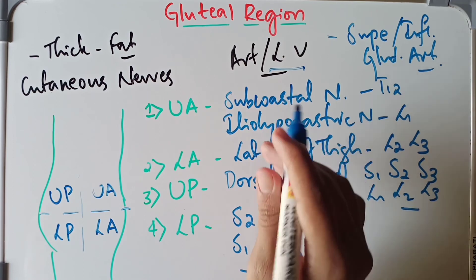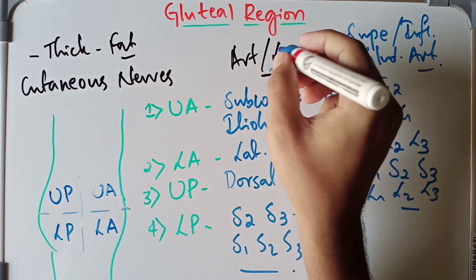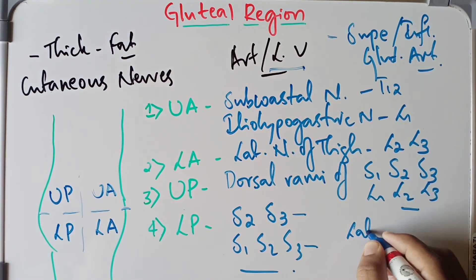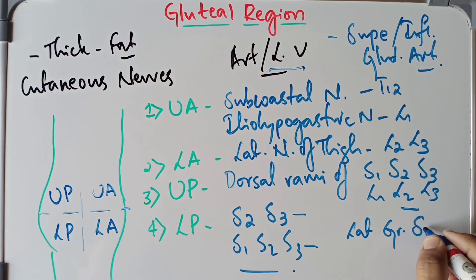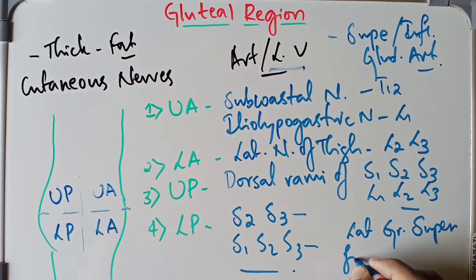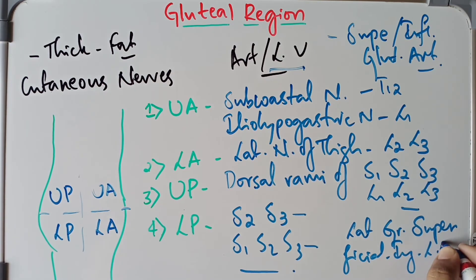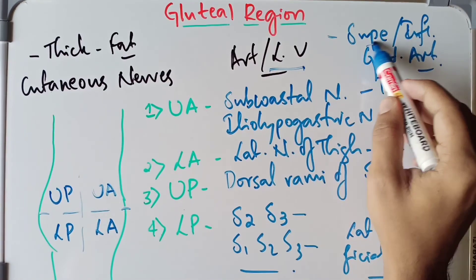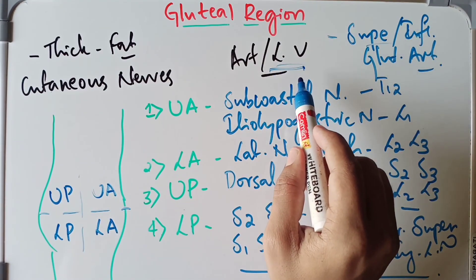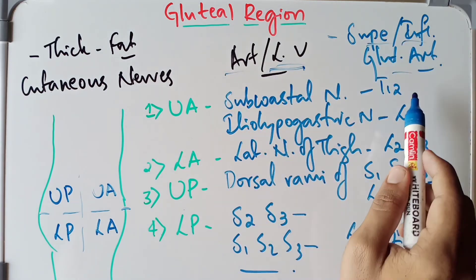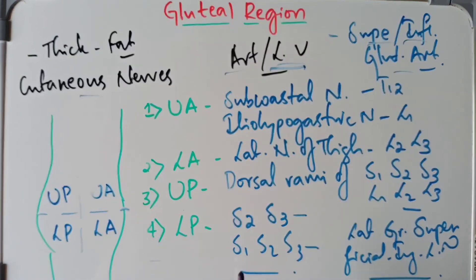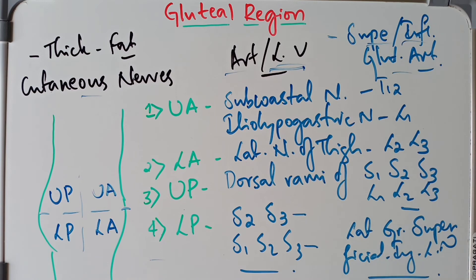The lymph vessels from the gluteal region drain into the lateral group of superficial inguinal lymph nodes. That covers the cutaneous arteries and the cutaneous innervation of the gluteal region. If you liked the video, please subscribe, hit the like button, and share it with friends who want to learn more about anatomy. Thank you for watching — see you in the next video.